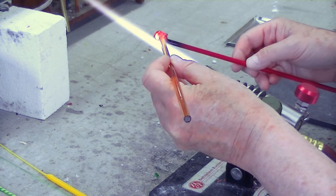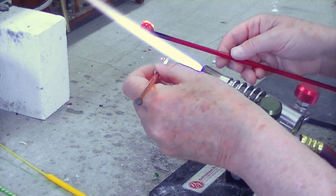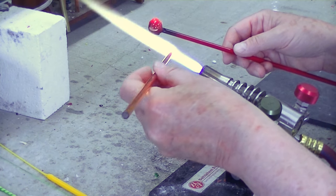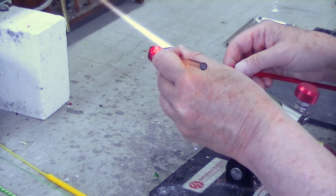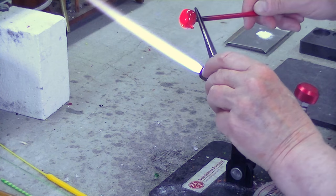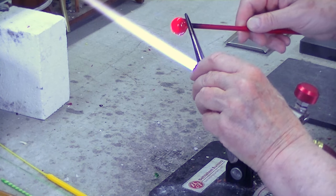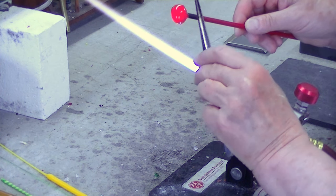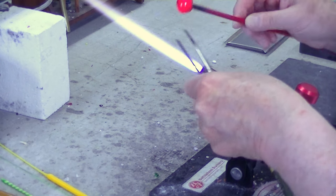After we finish encasing the bullet with the transparent color, I'm going to use my tweezers to pull that transparent down around the base of the gather. I'm now dragging down that transparent around the back of the gather.